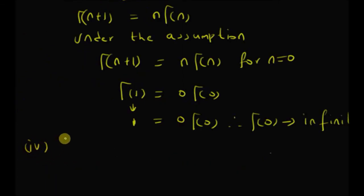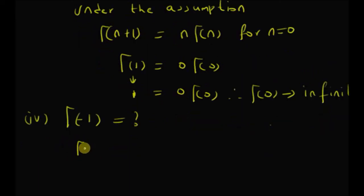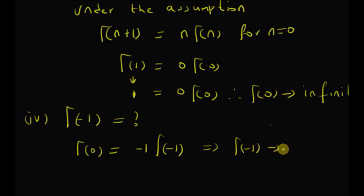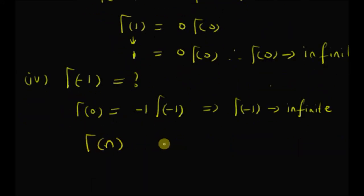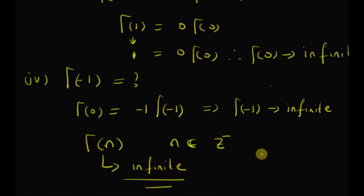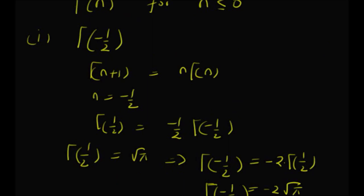Now for the value of gamma of minus 1, again under the assumption that gamma of n plus 1 is equal to n times gamma of n for n equal to 0, gamma of 0 can be written as minus 1 into gamma of minus 1. And since gamma of 0 is infinite, so is gamma of minus 1. Thus, gamma of any number n that is a member of the negative integers should be infinite. Thus, for the negative numbers, the gamma function is finite only for non-integers, and the gamma function is infinite for all the negative integers. Thanks so much for watching.